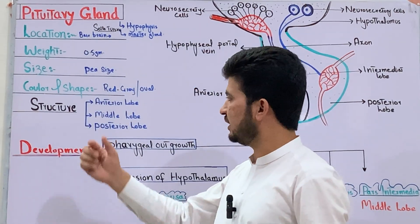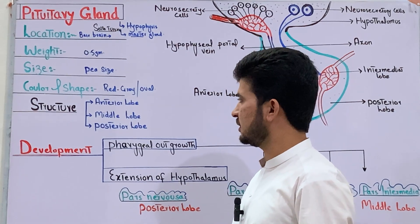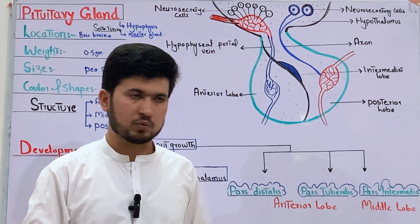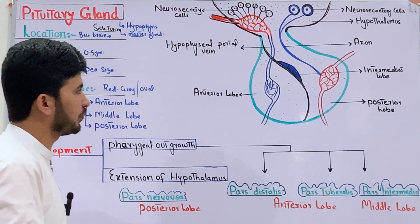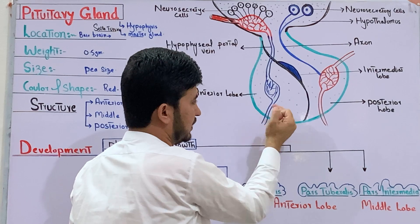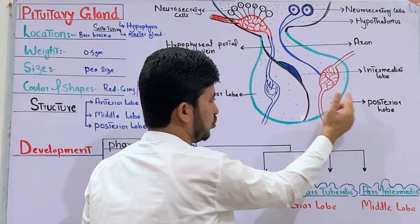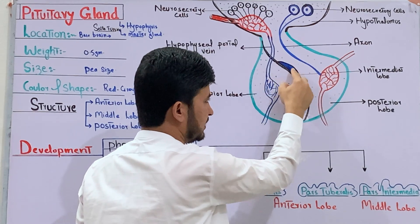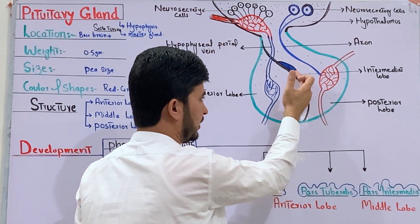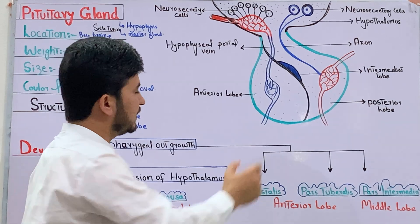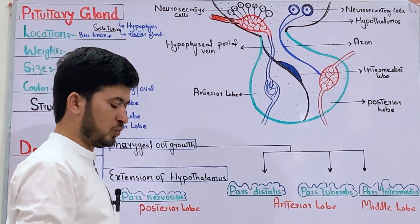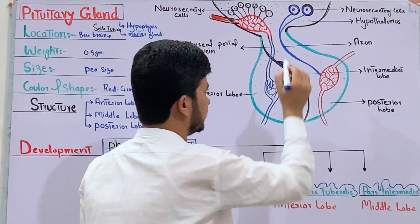The structure of the pituitary gland has 3 parts: the anterior lobe, the middle (intermediate) lobe, and the posterior lobe. In the diagram, the anterior lobe, posterior lobe, and intermediate lobe are all identifiable.